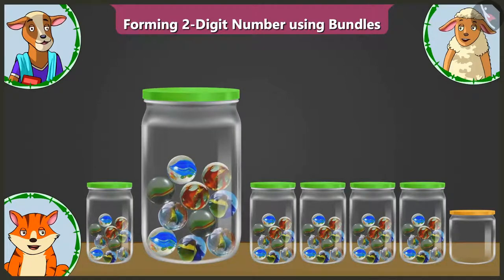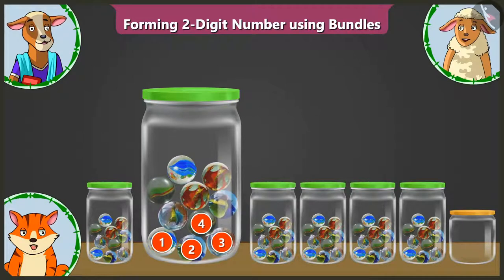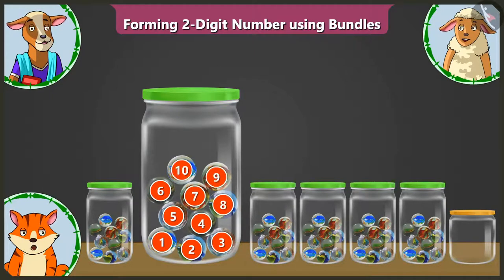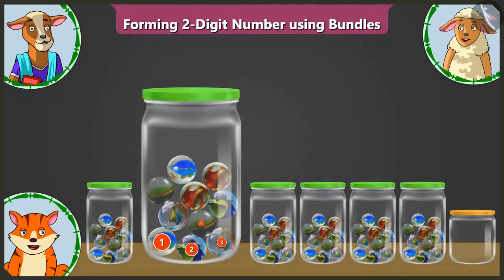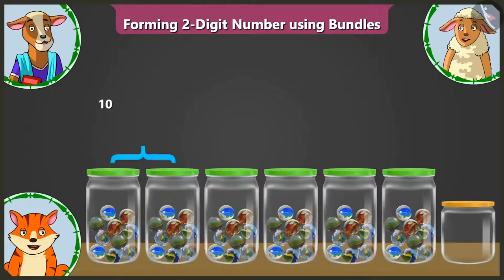Billy, you count the marbles in the second jar. In the second jar, there are one, two, three, four, five, six, seven, eight, nine and ten marbles. That is correct. So there are ten and ten — twenty — two groups of tens.